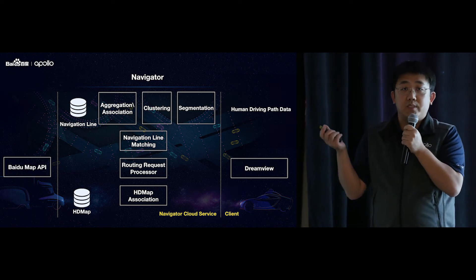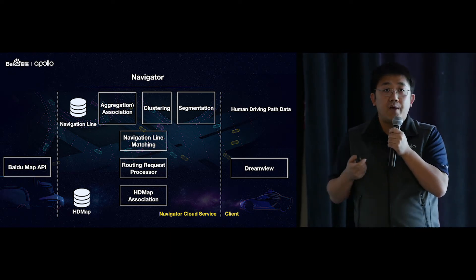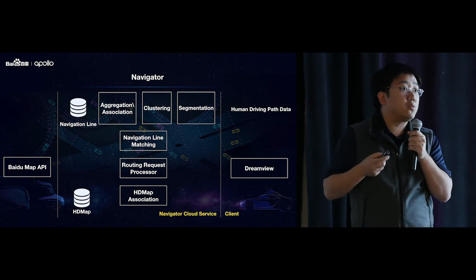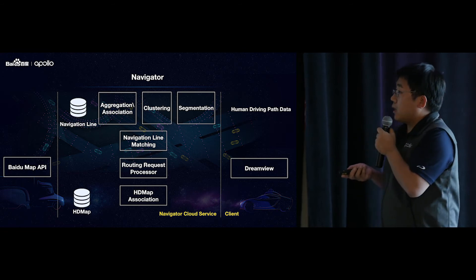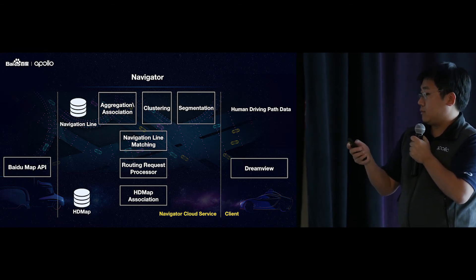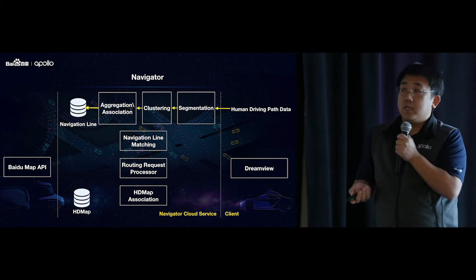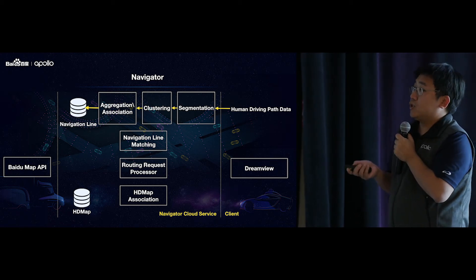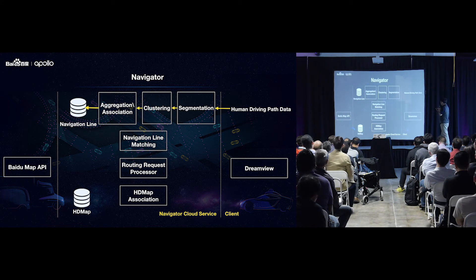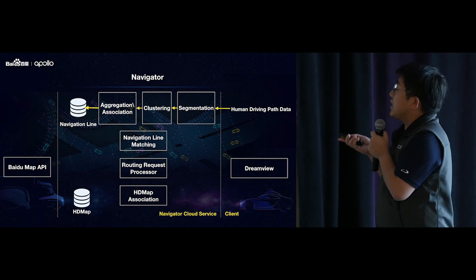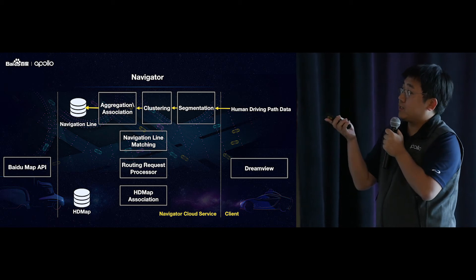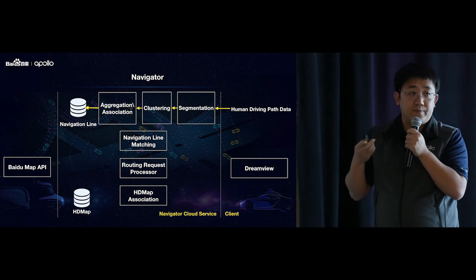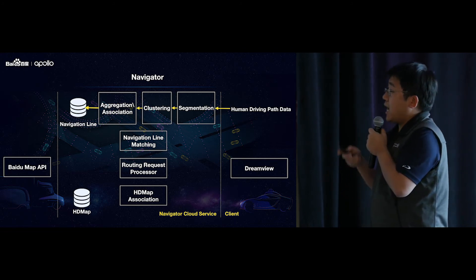Now I'll talk about the navigator component, which generates the navigation line. We implemented the navigator as a cloud service. On the cloud side, we have two databases: one for navigation lines and one for HD map. We also have a set of processors to process data and generate navigation lines. First, we collect human driving data and upload it via an interface. The processors then process the human driving data, generate the navigation line, and store it in the database.